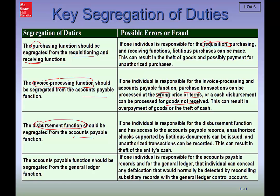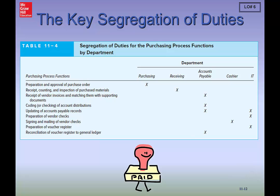If one person is responsible for both disbursement and accounts payable, again, we're susceptible to fraud. Lastly, the AP function should be separated from the general ledger function. This table shows you the entire segregation of duties between the functional areas and who should be doing what.